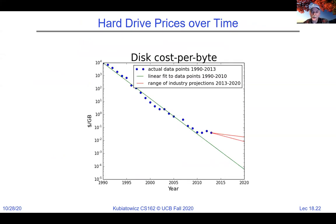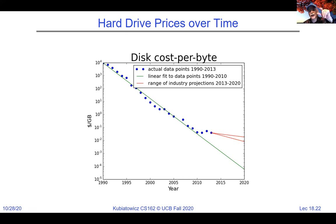Hard drive prices over time did really well up until about 2012, then started flattening out. Part of this was the drives were getting so large that there was a much smaller market for really huge disks. Another problem rearing its head in the early 2000s was that bits were getting so close together that the random thermal energetics of heat would scramble your bits — you'd lose them if you tried to make them any smaller. One of the things that made a big advance was vertically recording the magnetic domains, which really helped increase density.